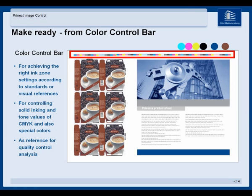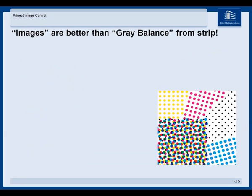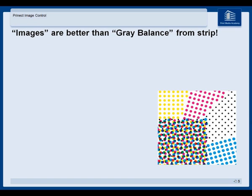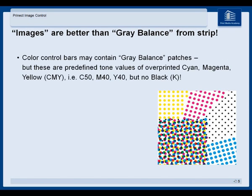Some color measurement devices use gray balance control, but this is not enough to control the wide range of tone values you have in the printed image. Usually color control bars contain gray patches, but they are predefined tone values of overprinted cyan, magenta, and yellow.